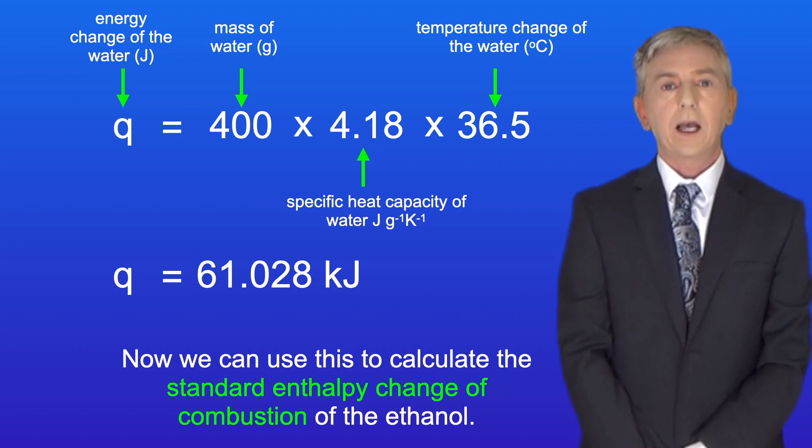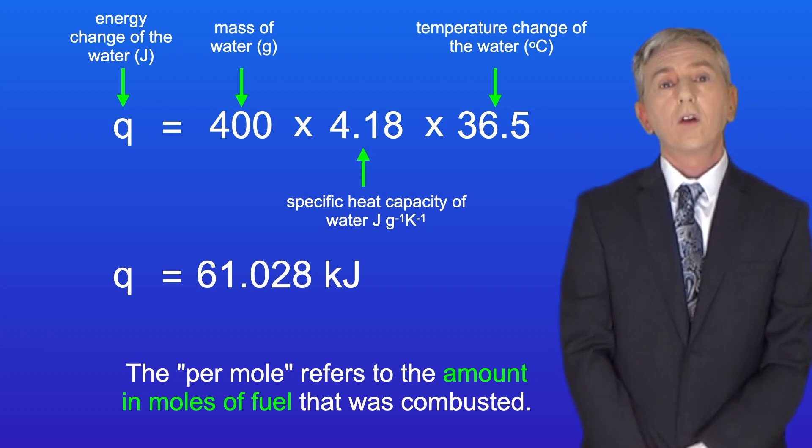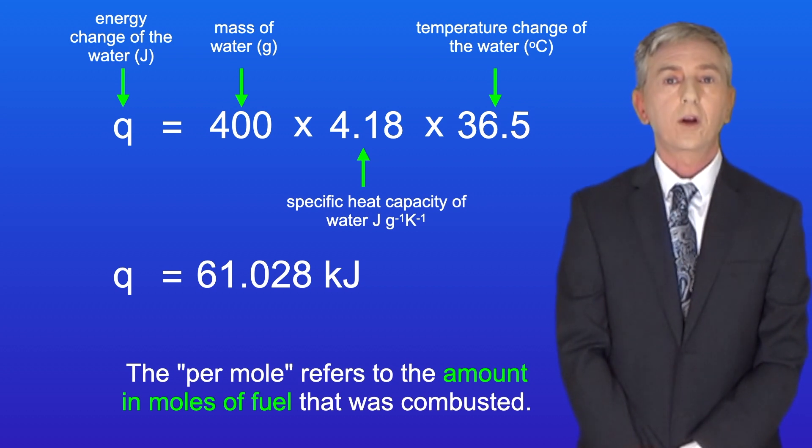Okay now we can use this to calculate the standard enthalpy change of combustion of the ethanol. The units of standard enthalpy change of combustion are kilojoules per mole. And the per mole refers to the amount in moles of fuel that was combusted.